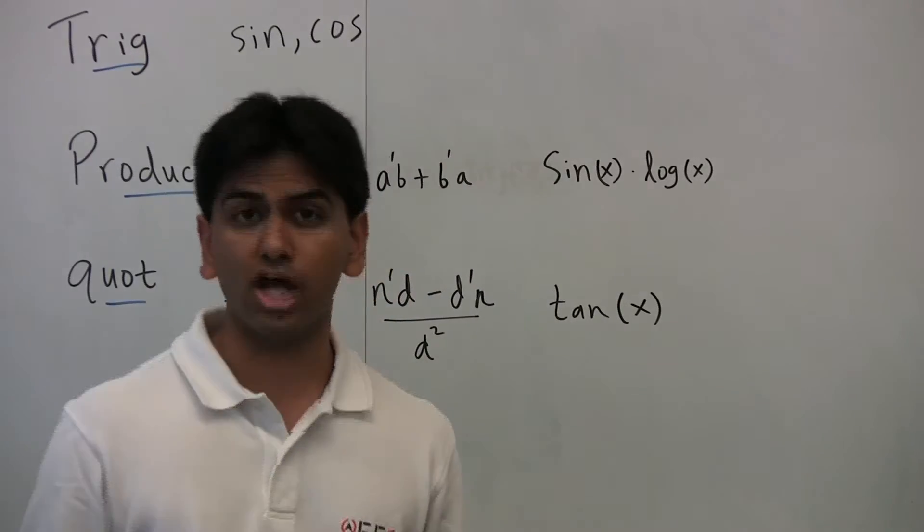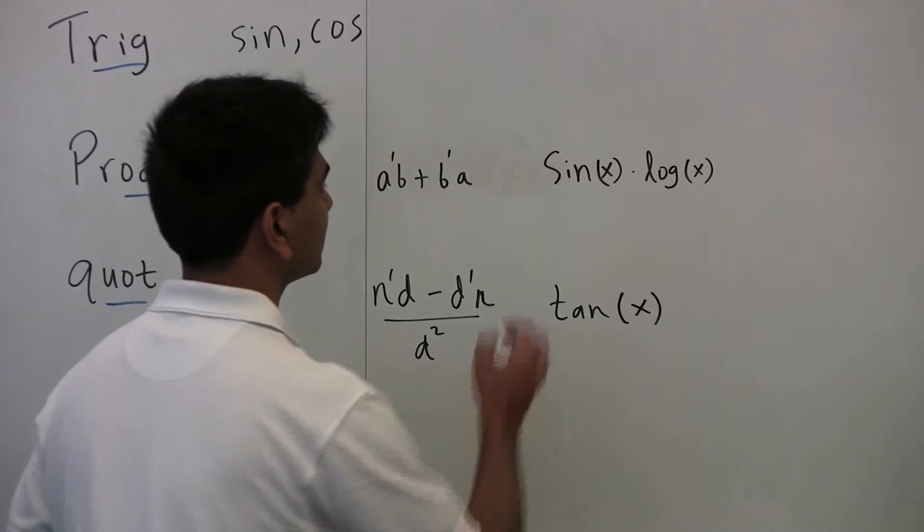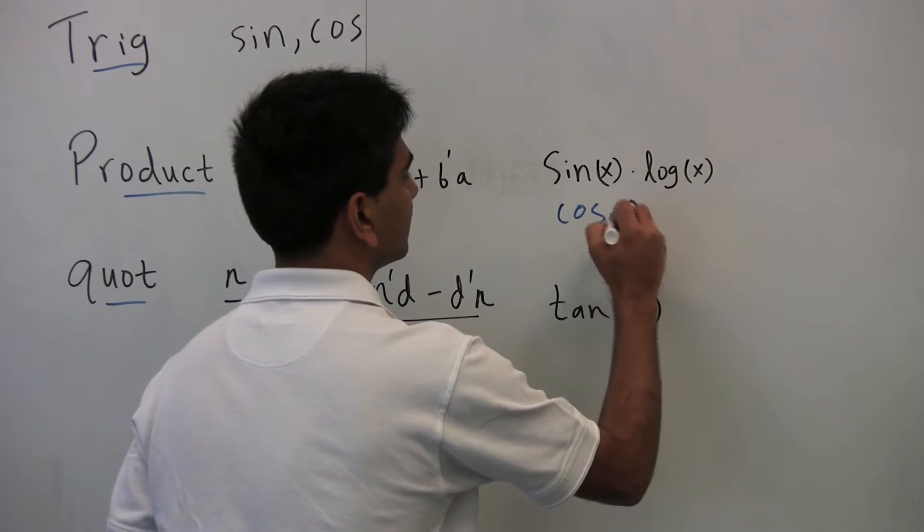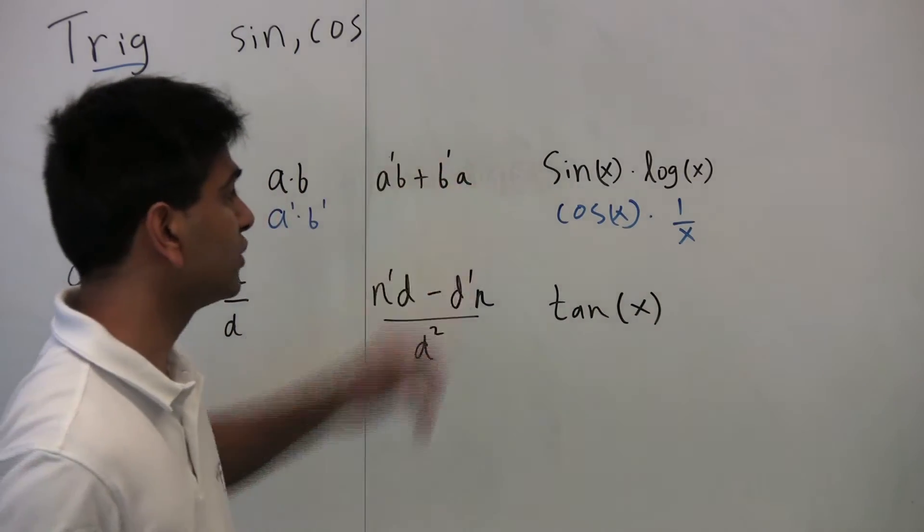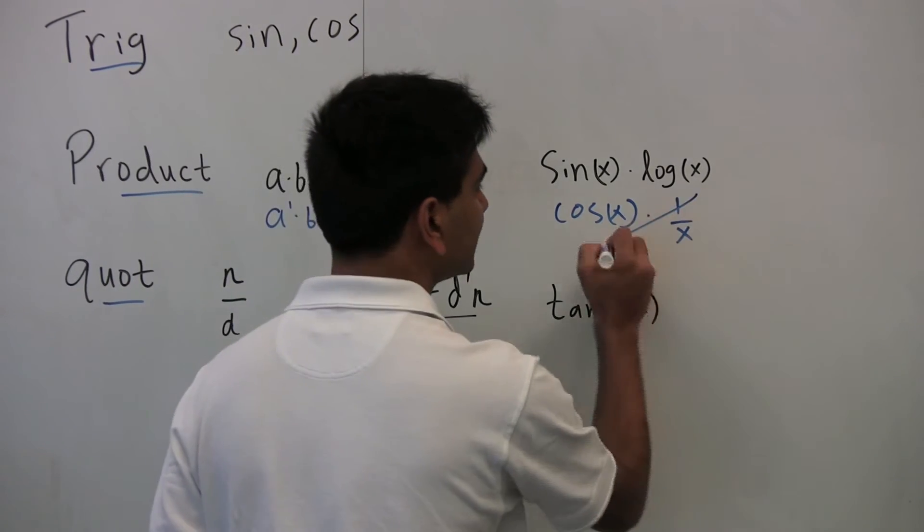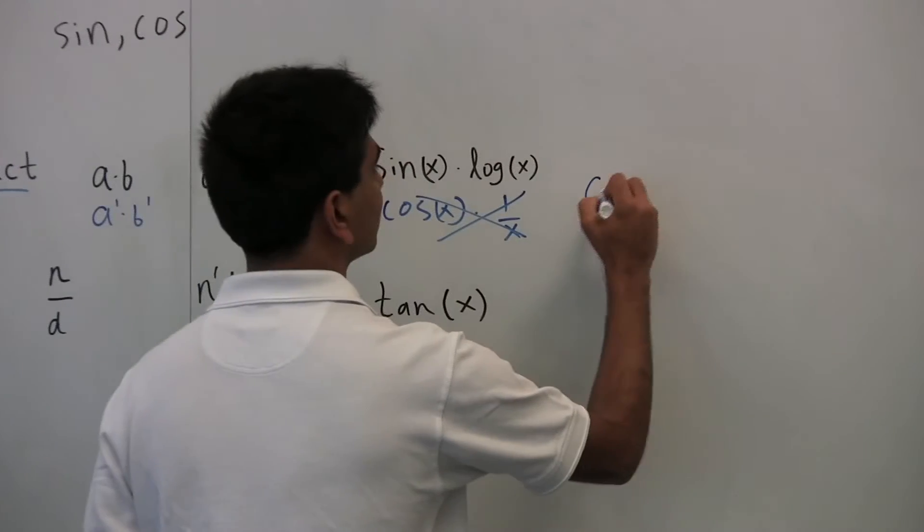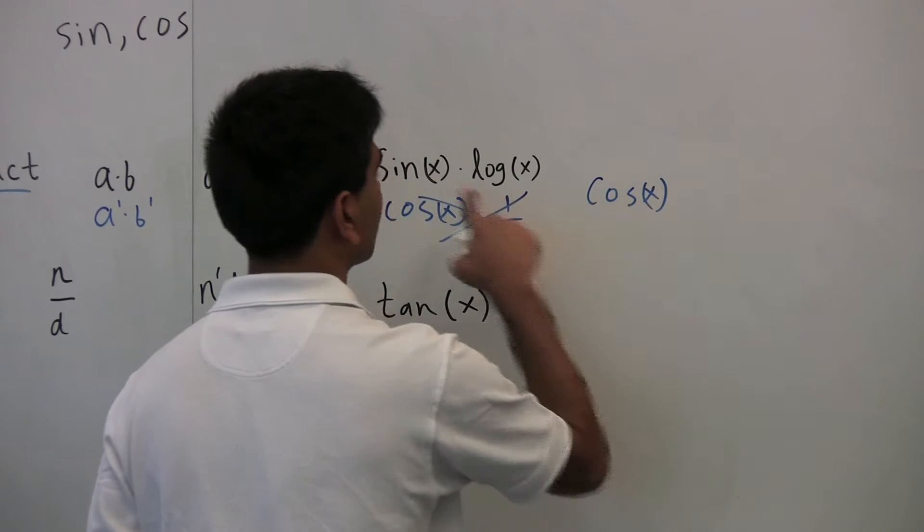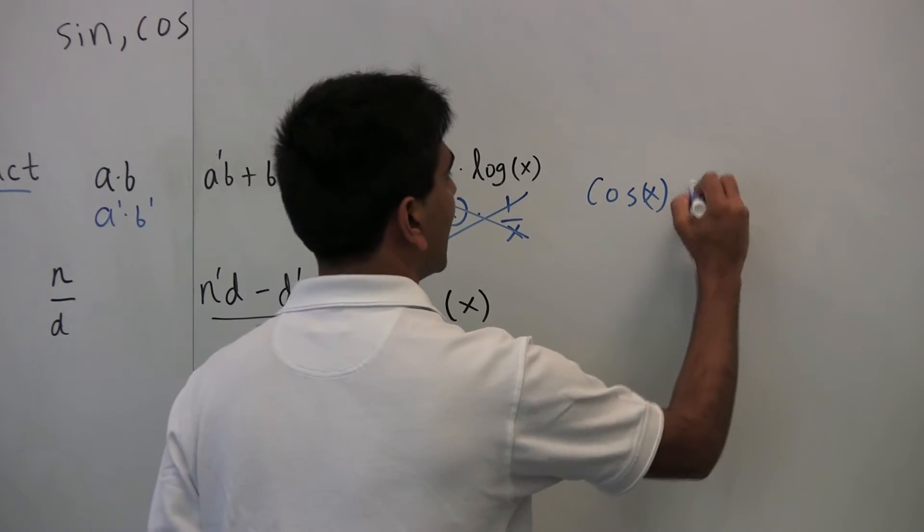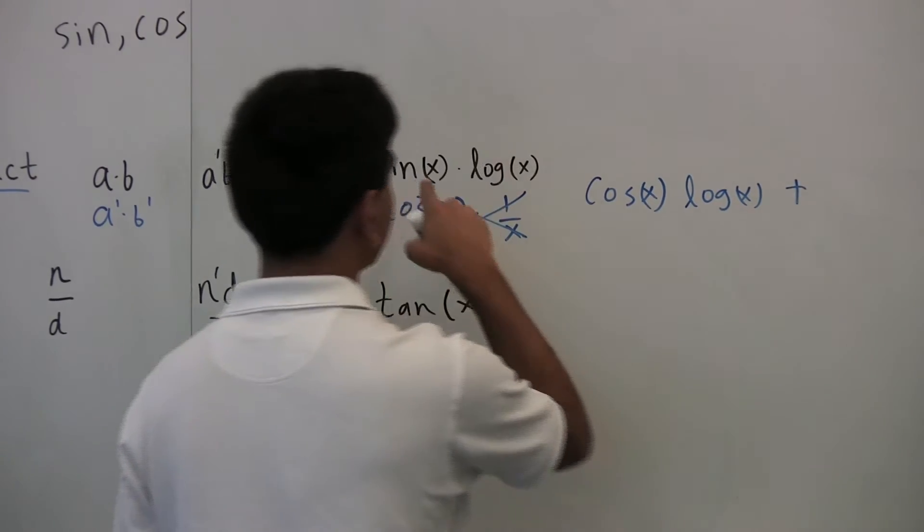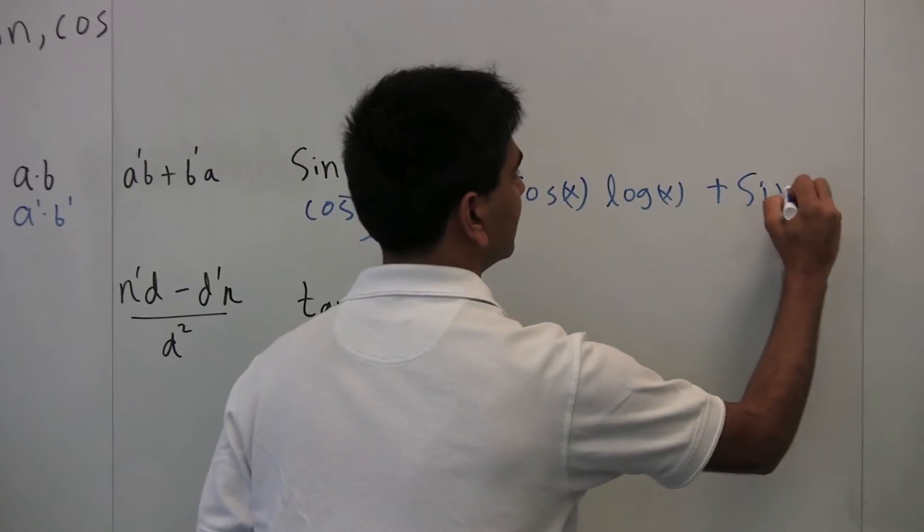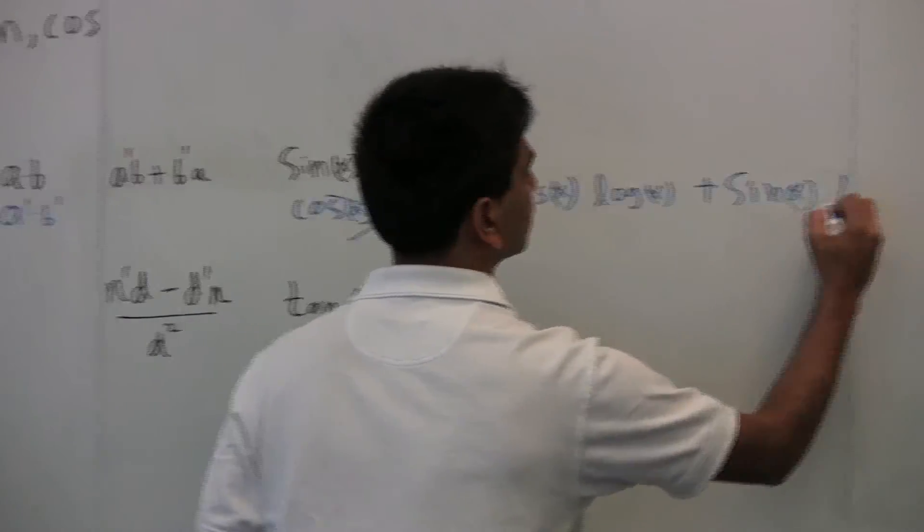So let's say you're given sine of x times log of x. The derivative is not just cosine of x times 1 over x, although it's tempting, so just don't forget to do the product rule. Using the product rule, this is not the derivative. Instead, the derivative is cosine of x, which is the derivative of the first guy, times just the second guy as is log of x, plus now the second guy as is sine of x, and then the derivative of this guy, which is 1 over x.